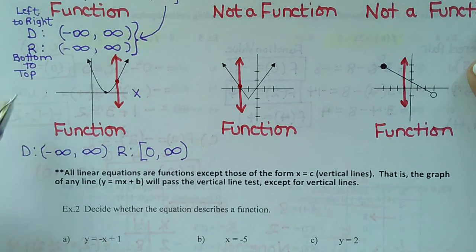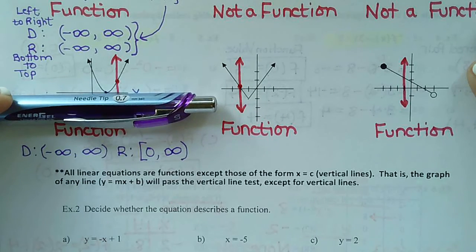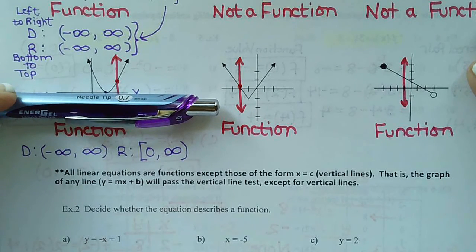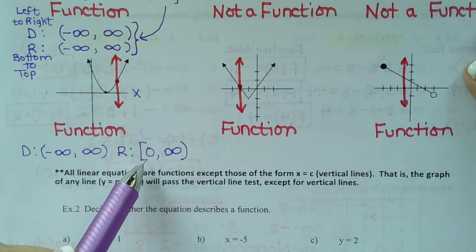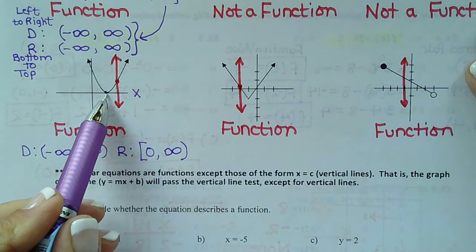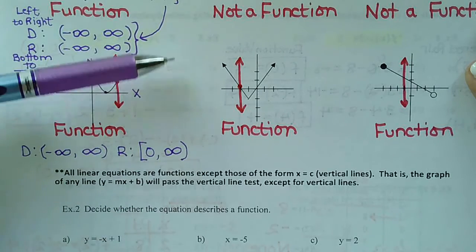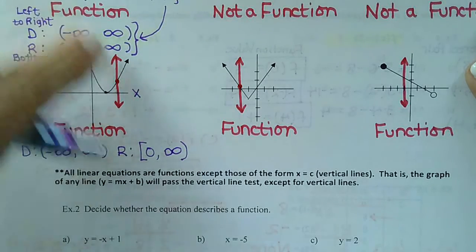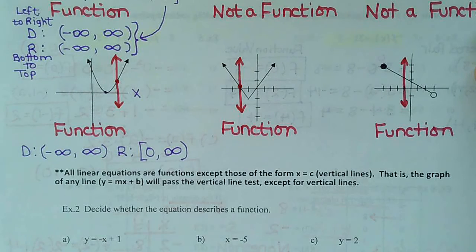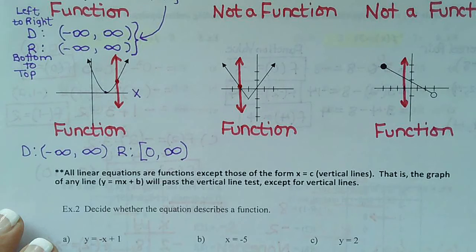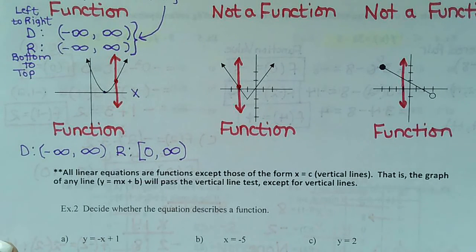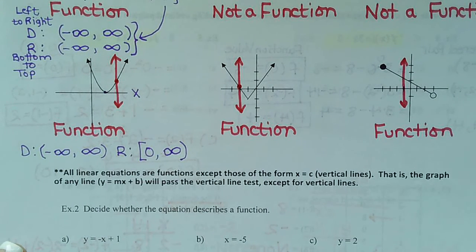So bottom to top — nothing, then I hit zero and the graph starts. The lowest point, the bottom point is zero included. We only use a parenthesis if it's an open circle or infinity. This is not an open circle — it's part of the graph, so we use a bracket. And as we roll up, we see it goes up forever, indicated by the arrows. This is a big part of your final and both this test and the next test, so that's why I'm taking so much time to go over it.